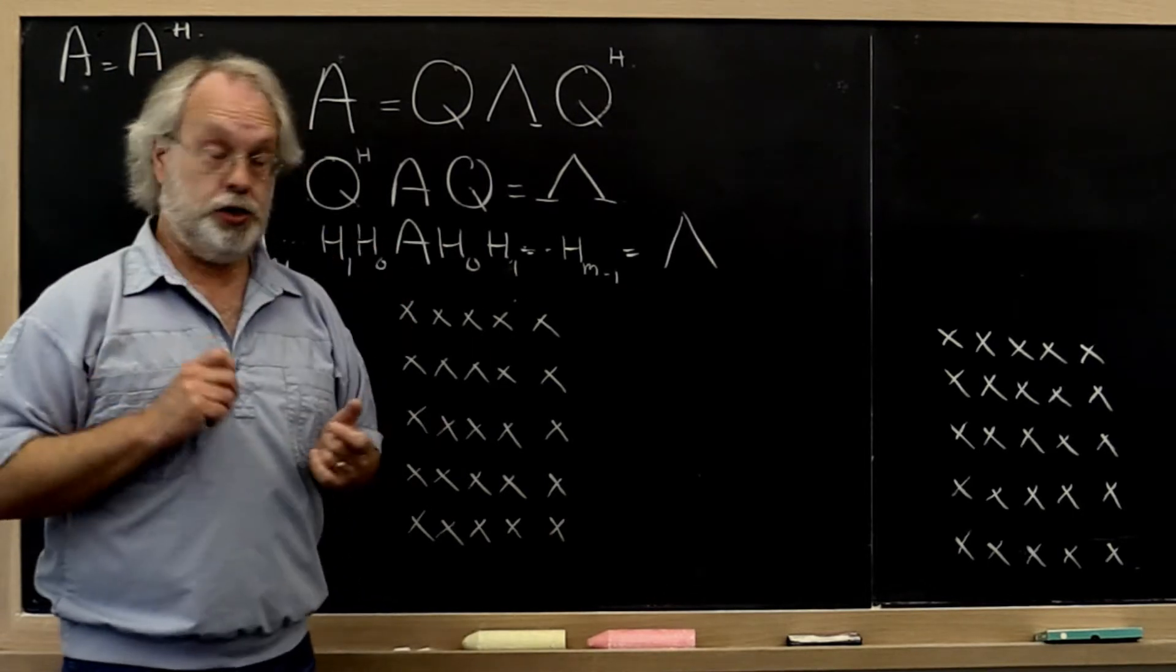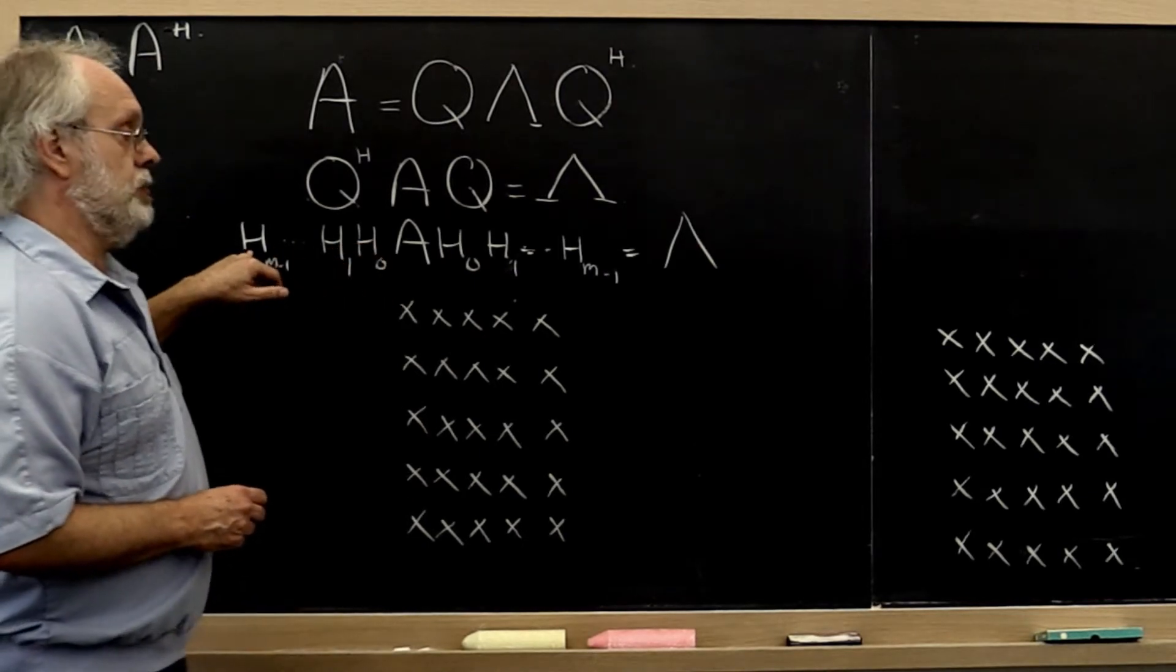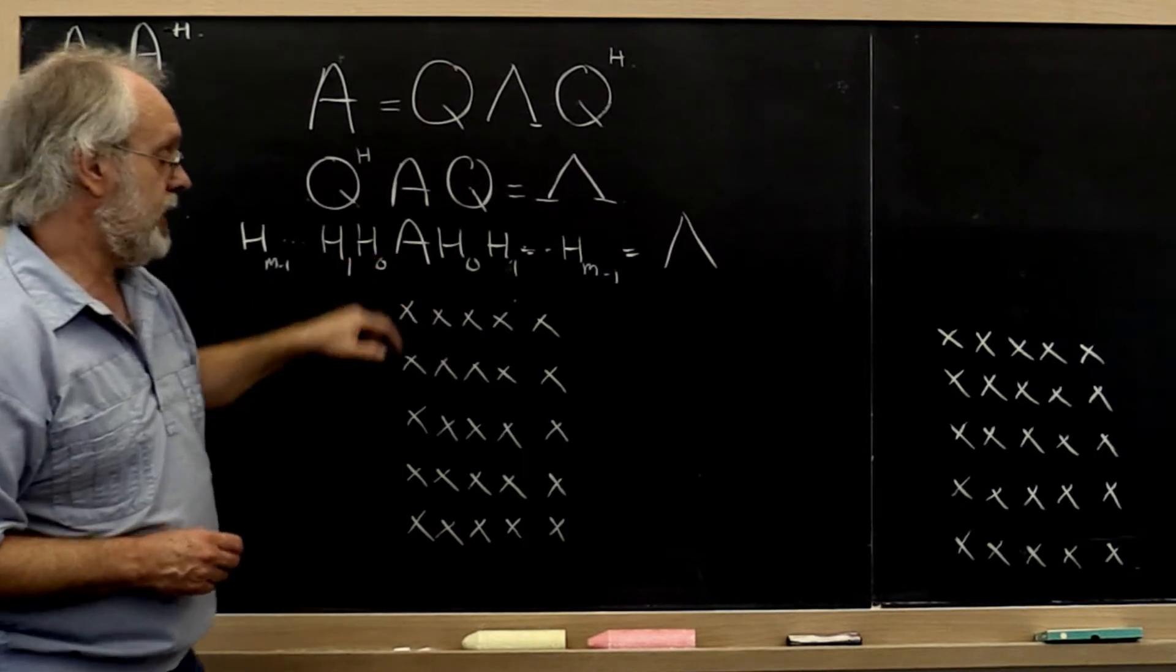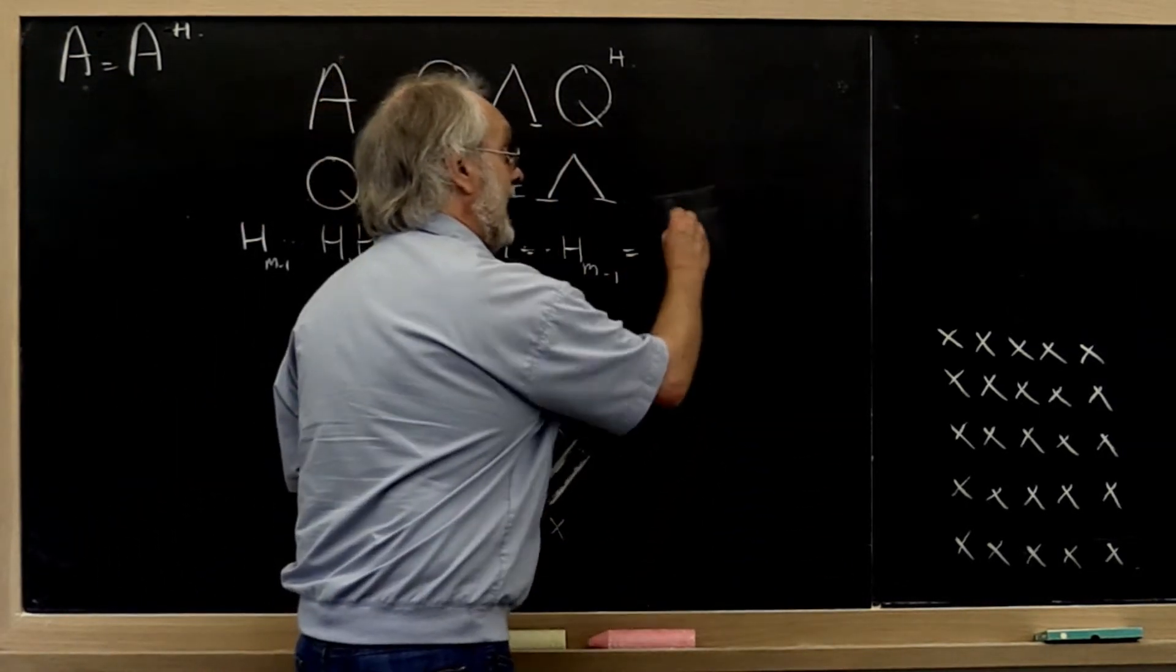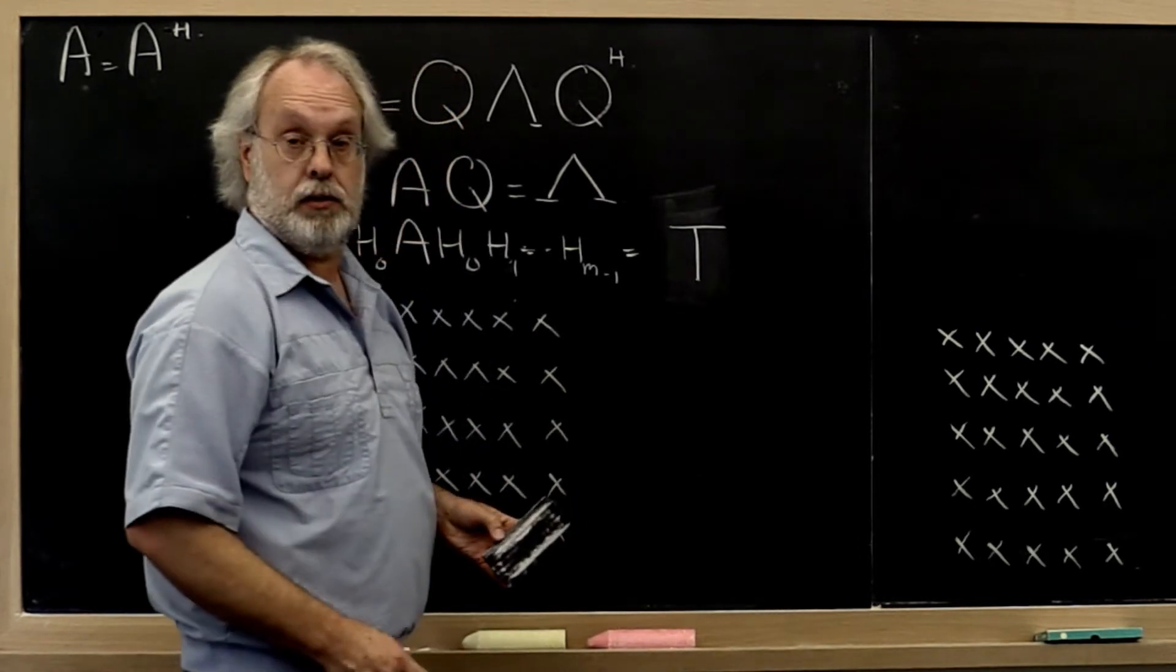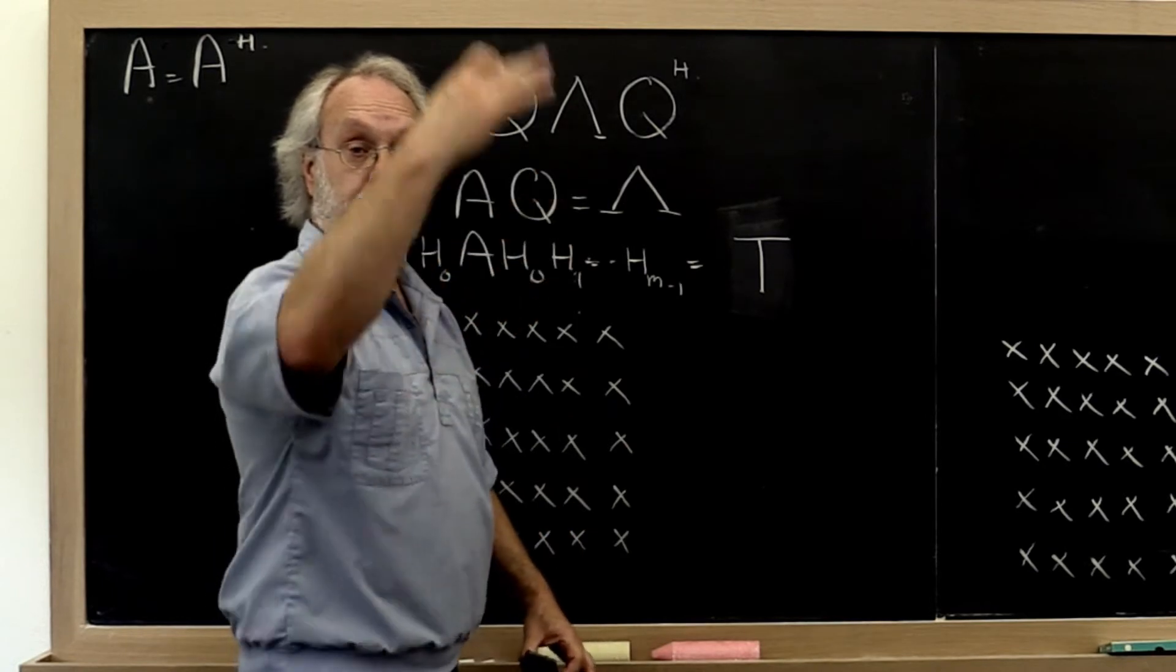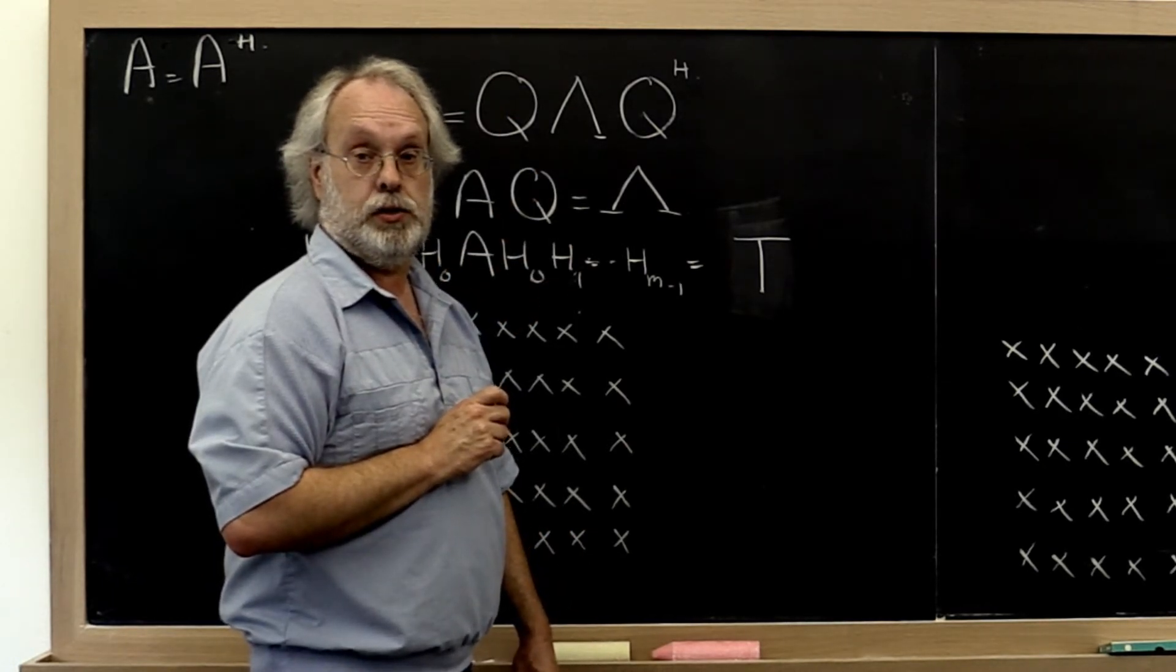What we are going to show you is that we can compute a sequence of Householder transformations such that if we apply those to matrix A, we end up with a tridiagonal matrix. A matrix such that below the first sub-diagonal and above the first super-diagonal, it only has zeros.